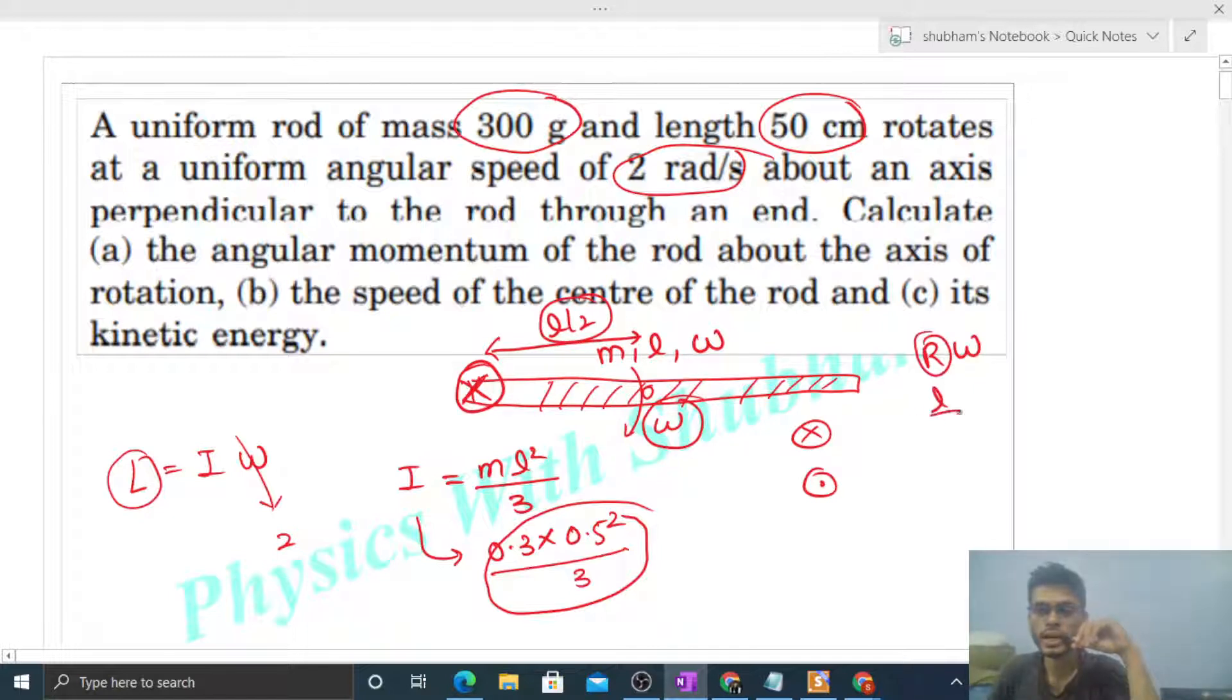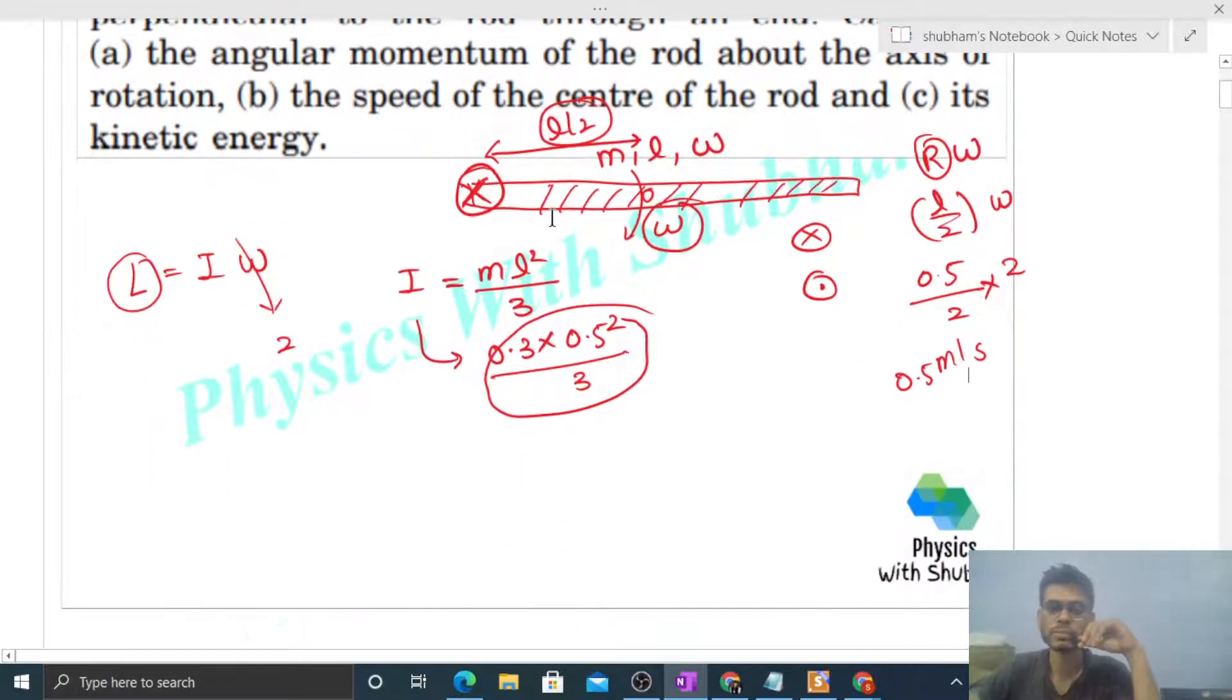So r ka value is L/2 into omega. Length is 0.5 divided by 2 into omega is 2, so 0.5 meters per second. That is the speed of the center. Its kinetic energy nikalni hai. Kinetic energy nikalane ke hamare paas 2 tareeke.